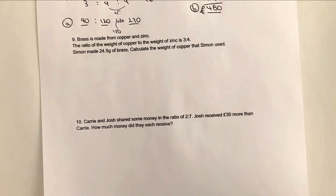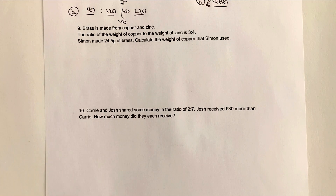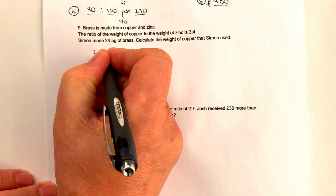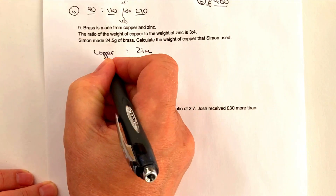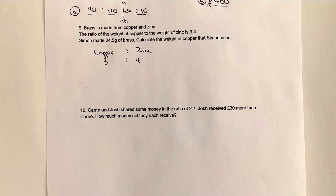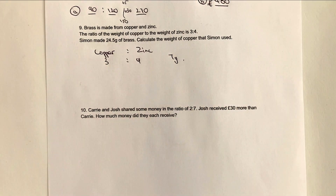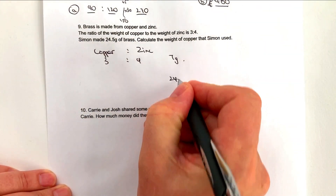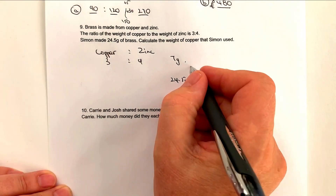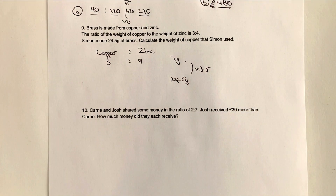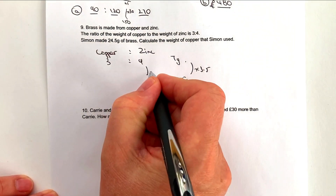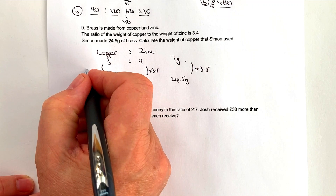Let's have a look at question number nine, which is making brass. Brass is made from copper and zinc, and the weight of copper to the weight of zinc is 3 to 4. So if I was making 7 grams of brass, I would use 3 grams of copper and 4 grams of zinc to get 7 grams of brass altogether. However, apparently I made 24 and a half grams of brass. This would probably be a calculator question — I need to multiply by 3 and a half in order to get something that's 24.5 grams, or 3 and a half times bigger. So I use that number and multiply through each of the weight of copper and the weight of zinc.